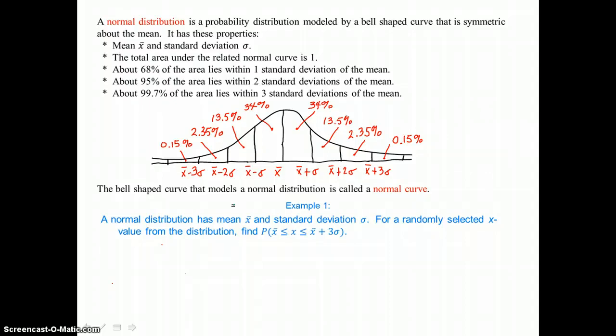About 99.7 percent of the area lies within three standard deviations of the mean. So here you'd add 2.35 percent, 13.5 percent, 34 percent, 34 percent, 13.5 percent, and 2.35 percent.